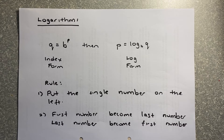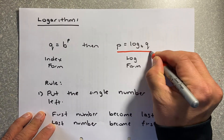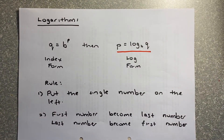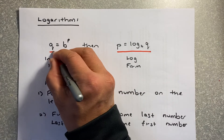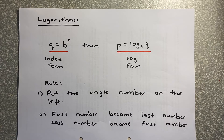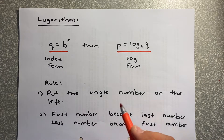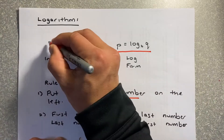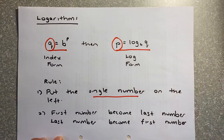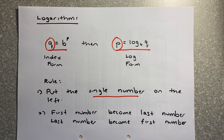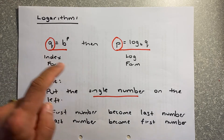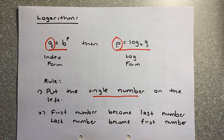The rule of logarithm is that if you are given a log question — P equals to log base B of Q — you are able to change it into an index form or a power form, and they are interchangeable. The rule to remember: put the single number on the left. Q and P are single numbers, so they are always put on the left. Then the first number of the log form becomes the last number.